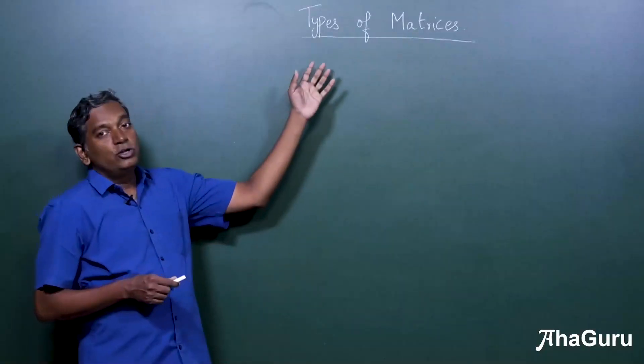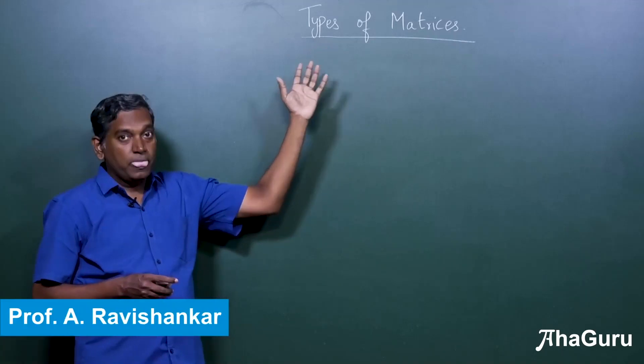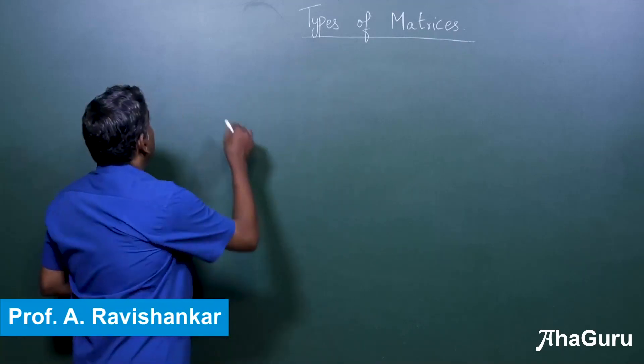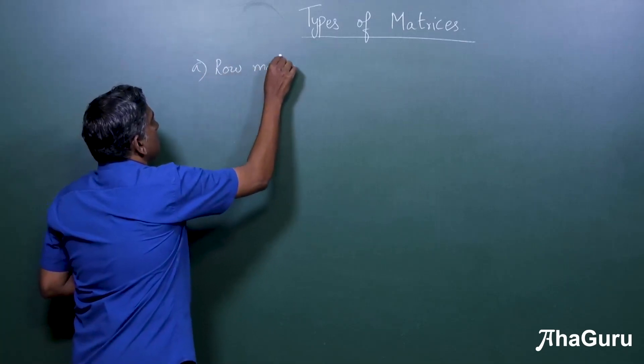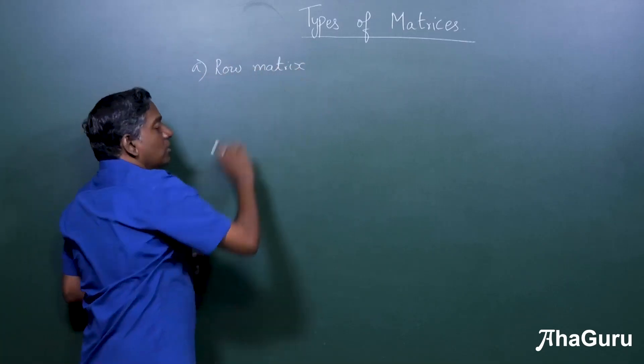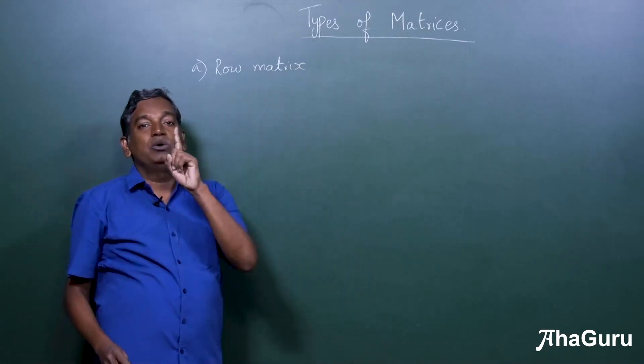Here we are going to look at certain special types of matrices. So first let's look at what is known as a row matrix. A row matrix is a matrix which has only one row.